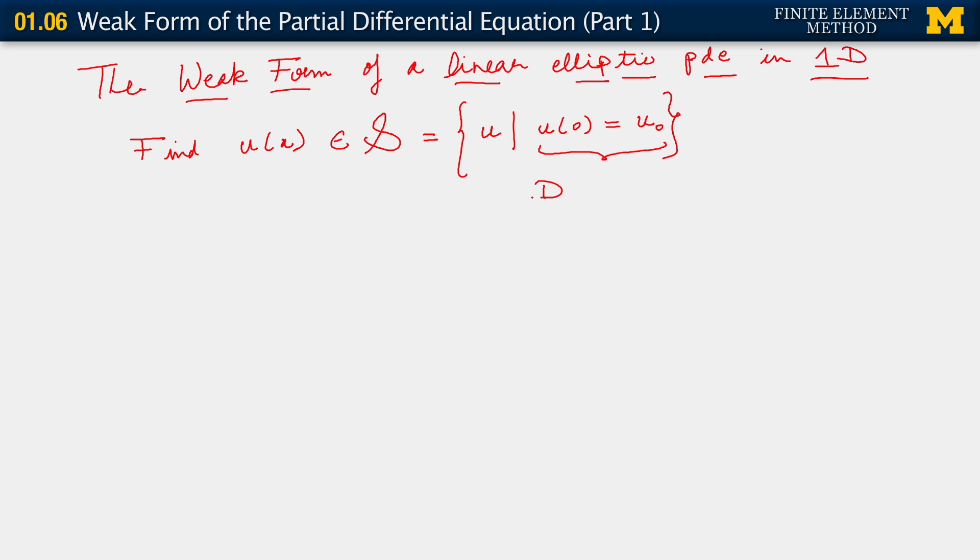For now, we're just saying that we have a single Dirichlet boundary condition. We're considering a case where the Dirichlet boundary condition holds at x = 0 only, because otherwise it just gets a little cumbersome to develop the most general form. We'll come back to it. So this is what we want to do: find u belonging to this particular space S, which for now is completely general. All we're saying is that it needs to satisfy the Dirichlet boundary condition.